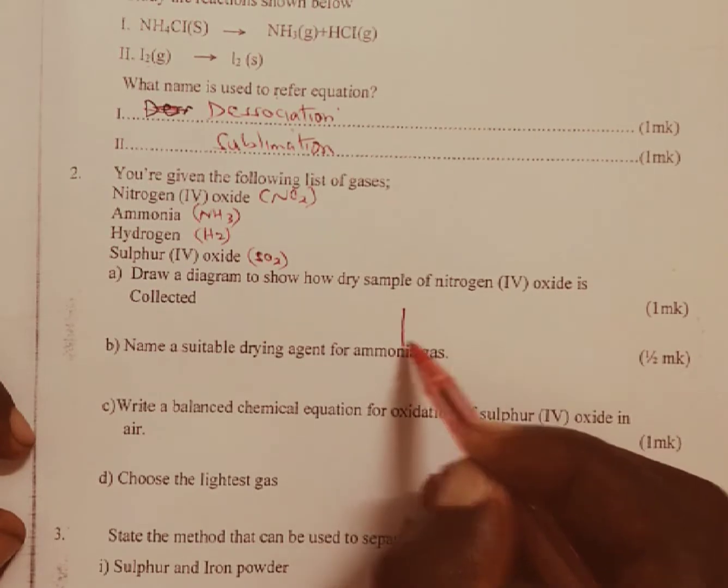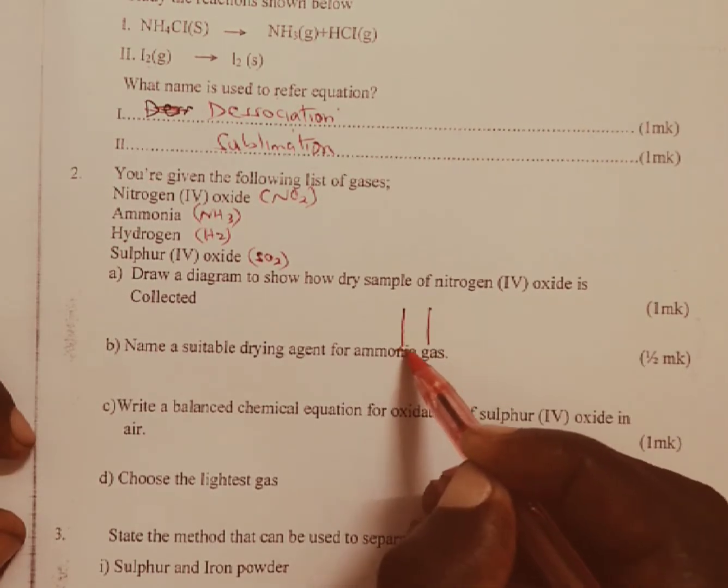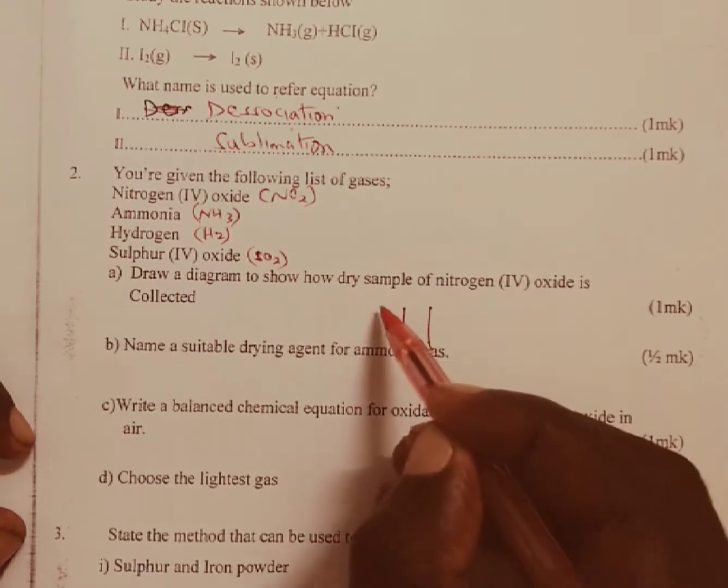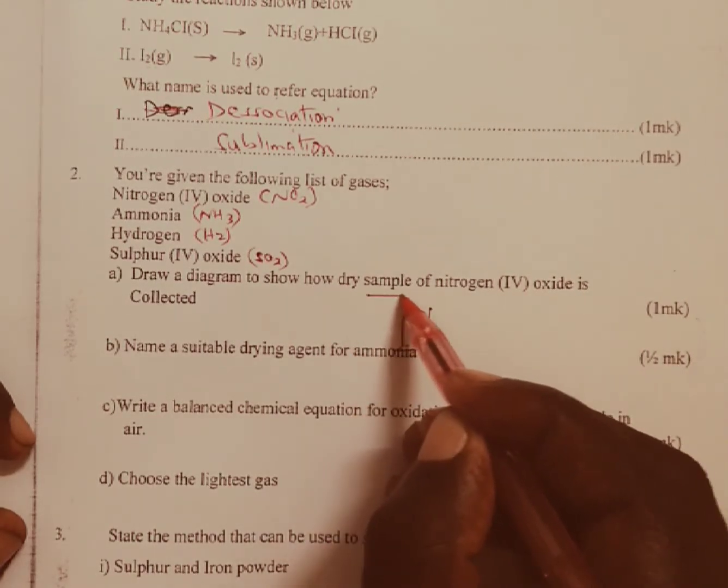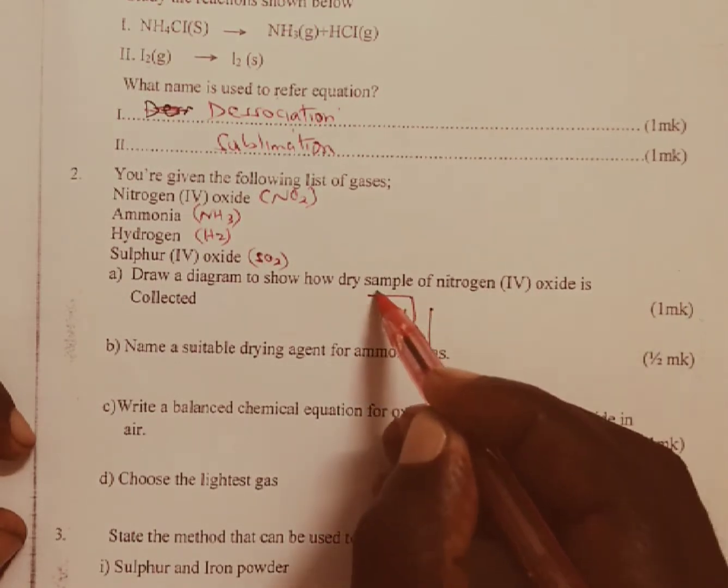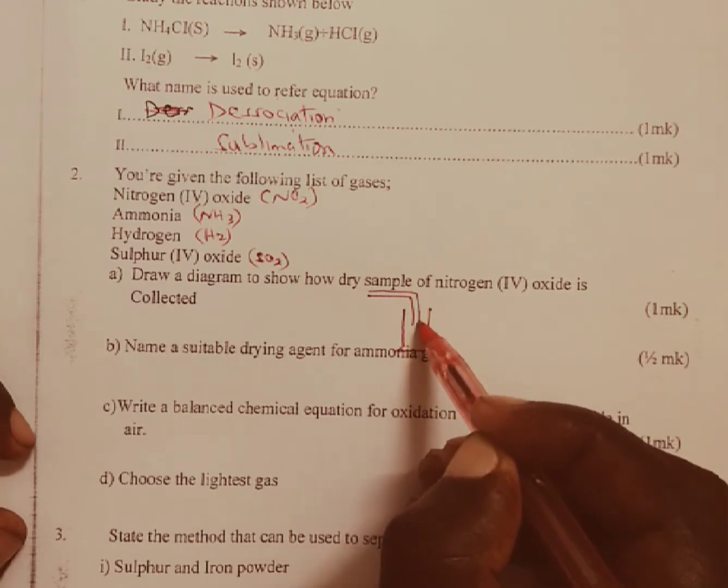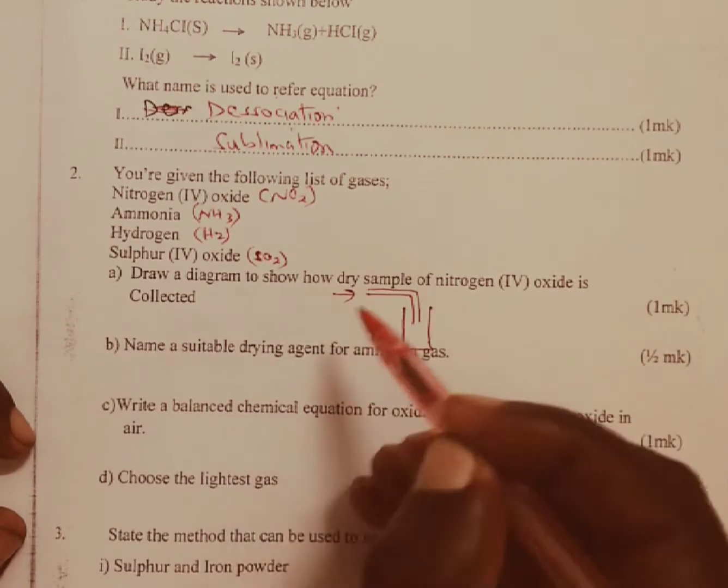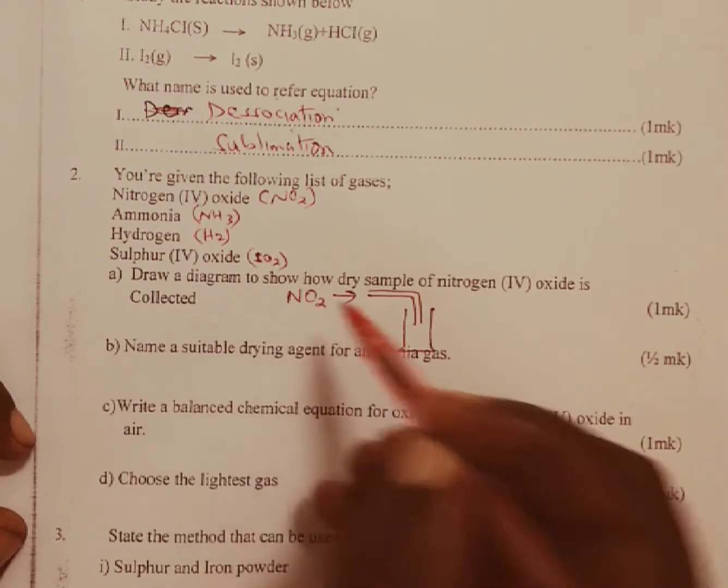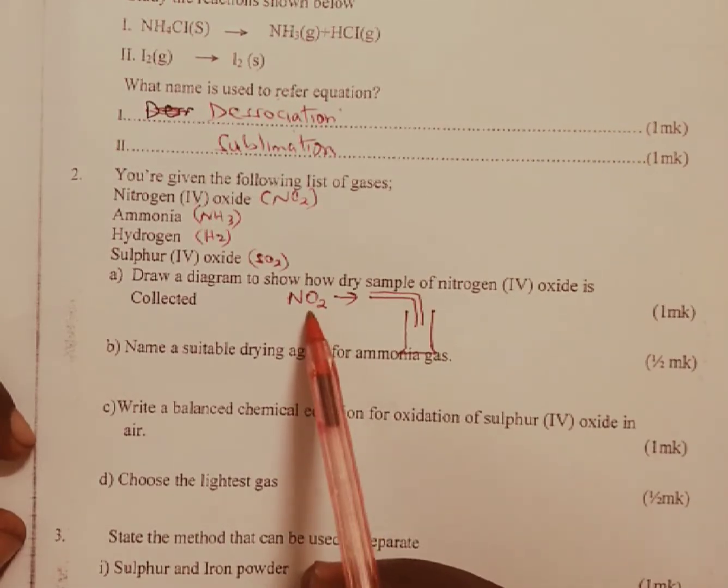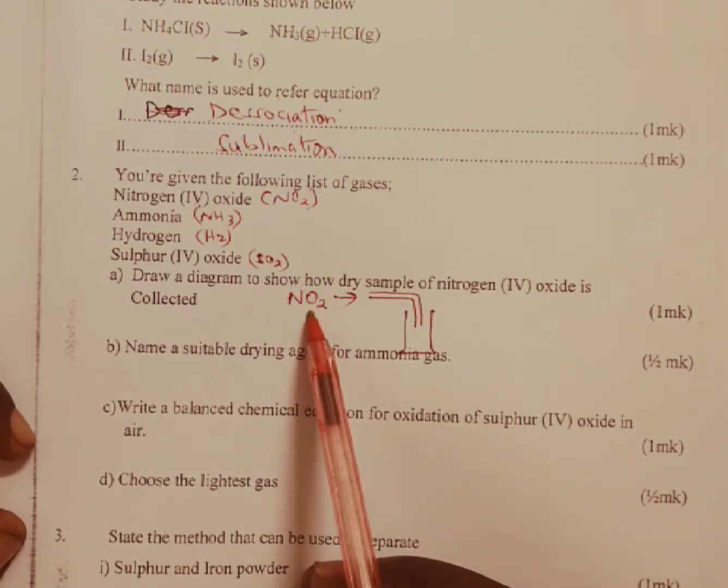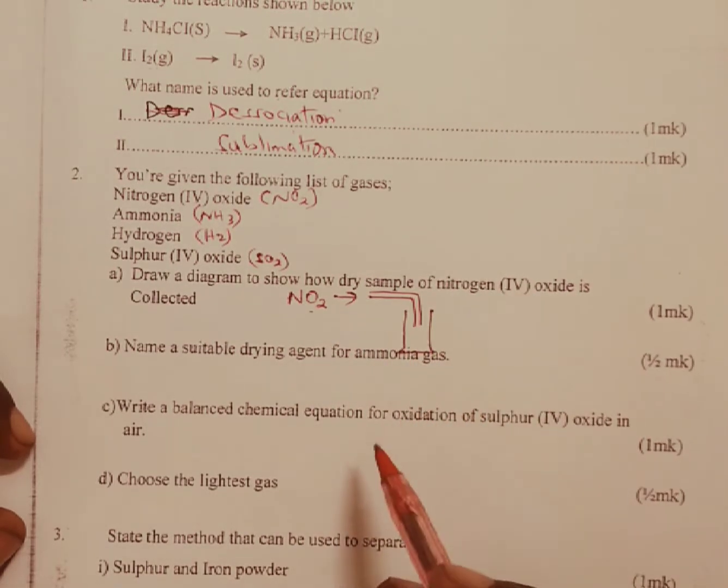This is a gas jar here, and we have nitrogen 4 oxide, NO2. Remember this gas is heavier than air, hence collected by downward delivery.